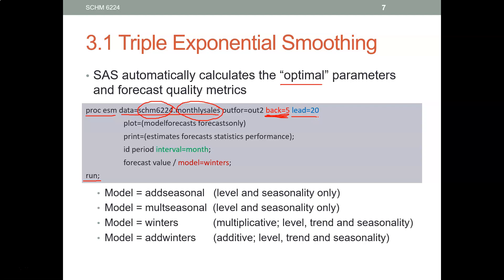Here you tell SAS how many forecasts to generate. In this particular example, I tell SAS to generate 20 forecasts — you can use 10, 50, or any number. SAS is going to generate forecasts for the five observations in the holdout sample and then 15 additional forecasts, for 20 total. Those forecasts will be written in a SAS file called OUT2.